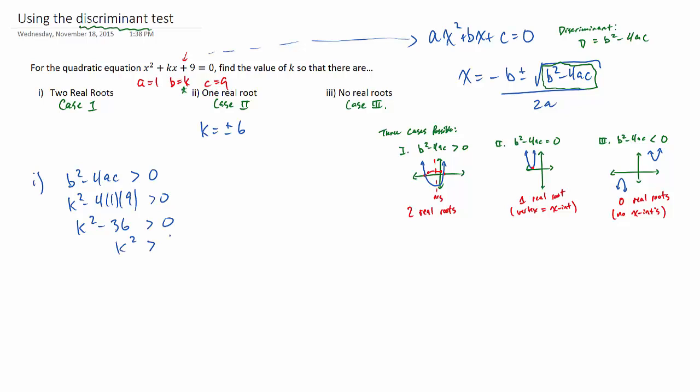Now, for case one, we have to set our discriminant to be positive. So basically, k has to be greater than six. Or we could say that k is less than negative six.